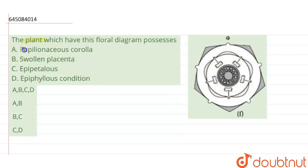The first option given here is papilionaceous corolla. A papilionaceous corolla is that type of corolla in which the aestivation is of vexillary type, meaning that the two lateral small petals are overlapped by large petals.